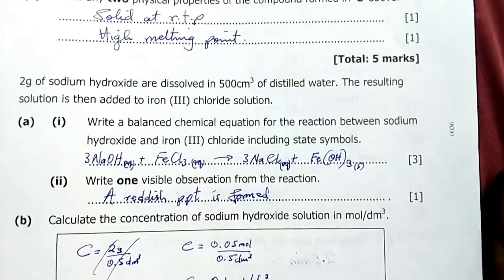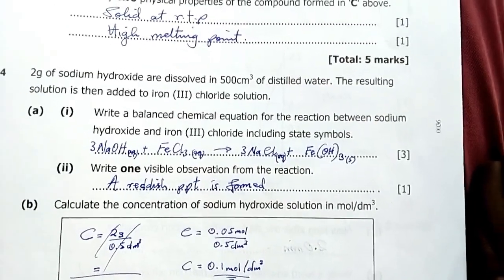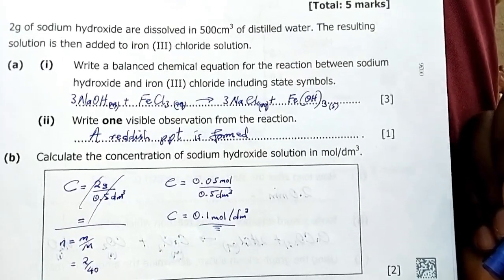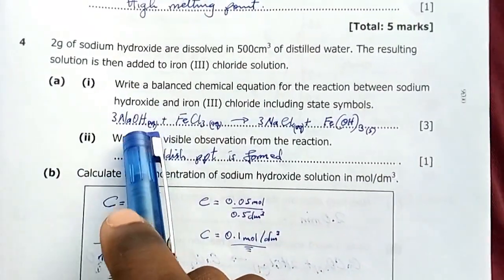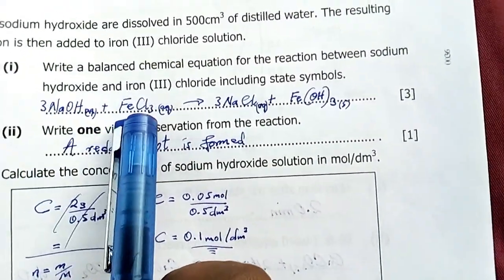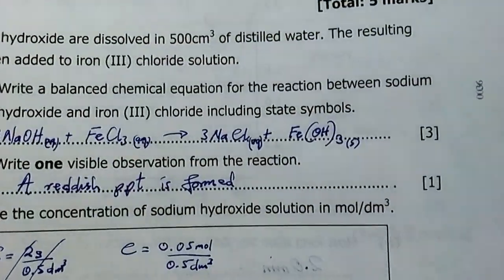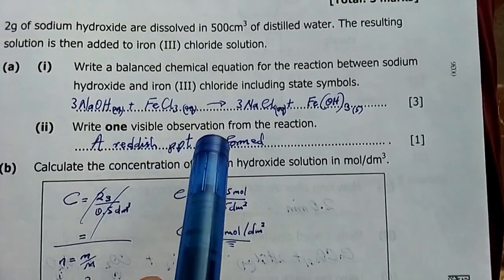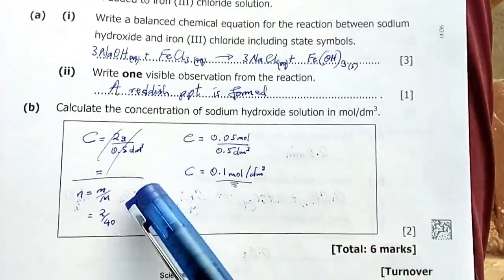Two grams of sodium hydroxide are dissolved in 500 cubic centimeters of distilled water. The resulting solution is then added to iron three chloride. Write a balanced chemical equation for the reaction between sodium hydroxide and iron three chloride including state symbols. The equation is: sodium hydroxide reacts with iron three chloride giving us sodium chloride and iron hydroxide, a solid. Iron hydroxide is insoluble in water. Write one visible observation from the reaction. A reddish precipitate is formed, which is the iron hydroxide.